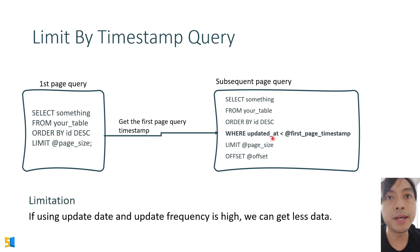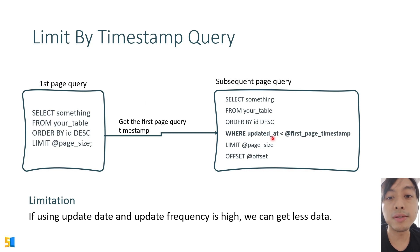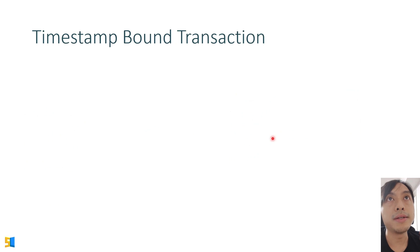The limitation is that if you are using updated_at and the update frequency is high, you may get less data because rows keep getting updated, moving their updated_at beyond the cutoff. The second method is by using timestamp-bound transactions.